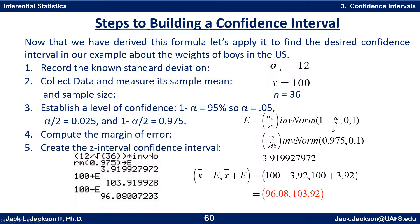We plug 0.975 into the formula, along with sigma of the x's as 12 and n equals 36, and work it out on a calculator. That's 12 divided by the square root of 36, times inverse norm of 0.975 — the mean and standard deviation default to 0 and 1 if omitted. The margin of error e comes out to approximately 3.9199. The upper confidence bound is 100 plus e, which gives 103.9199, and the lower bound is 100 minus e, which gives 96.0801.